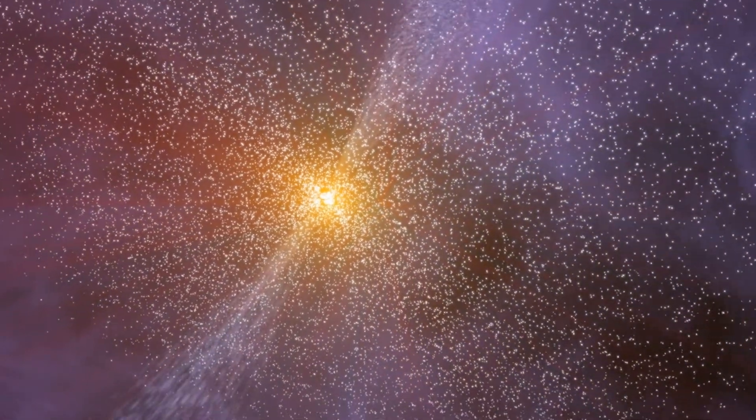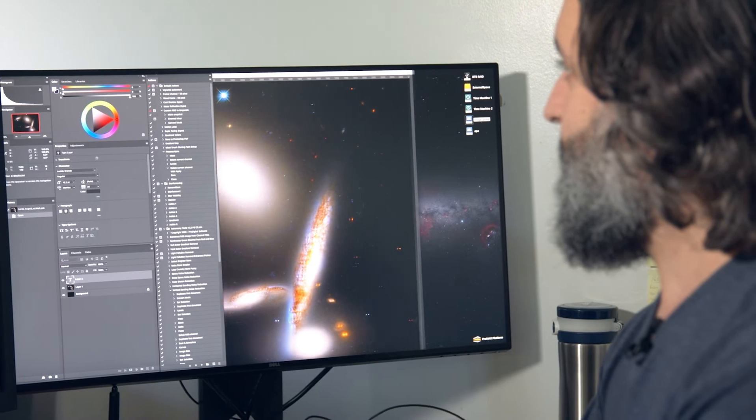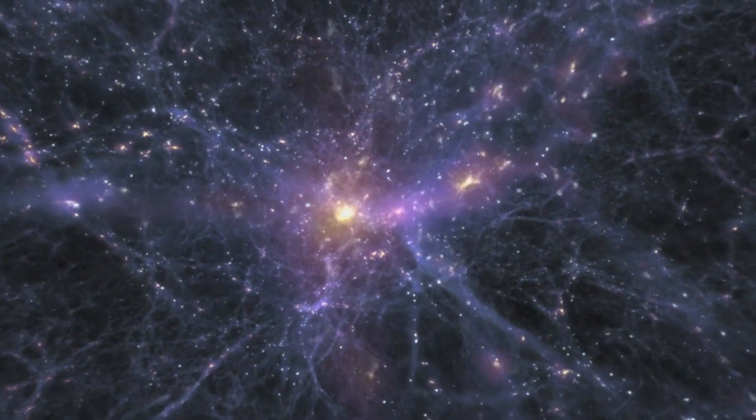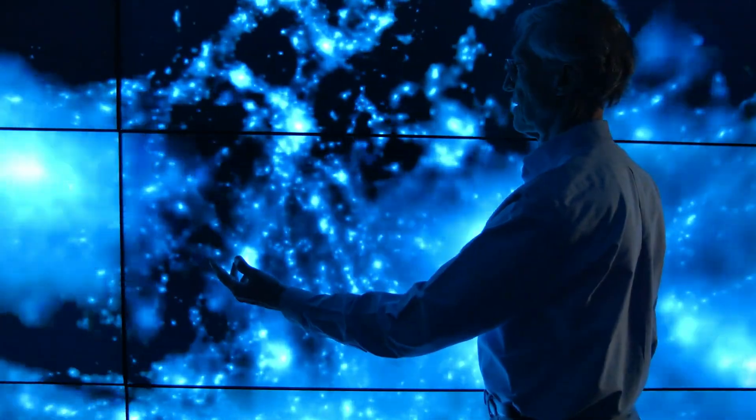But surprisingly, the stars don't fly off. This unexpected speed suggests that there must be extra gravity at play, pulling on these stars to keep them in their fast orbits. Scientists find this mysterious force very strange because they aren't sure exactly what it is.